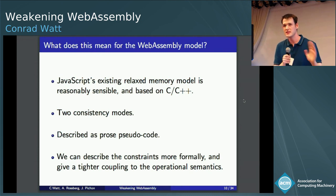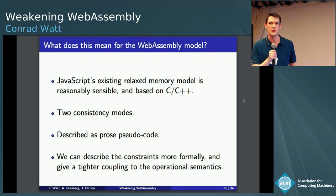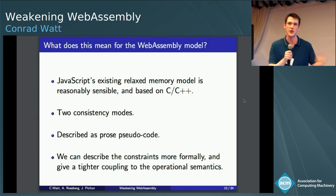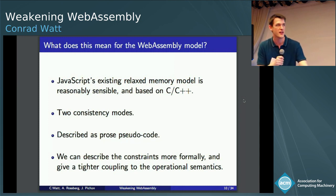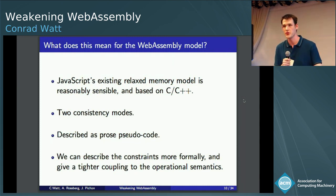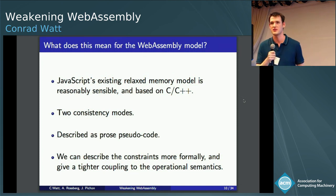JavaScript's existing relaxed memory model is actually relatively sensible. It's based on C11. It provides two consistency modes, non-atomics and sc-atomics. And if you go into the JavaScript specification, you can actually find a little section called memory model. There's a whole kind of prose pseudocode laid out explaining what they expect to happen with the various consistencies of accesses. So one thing we can immediately do better is, firstly, we can describe the constraints in purely formal language. And secondly, we can precisely describe the coupling between these axiomatic constraints and the operational semantics, which is something historically C and JavaScript have both had trouble with.